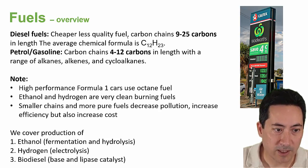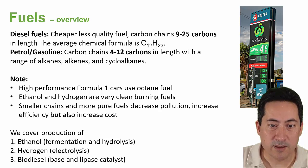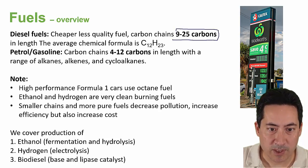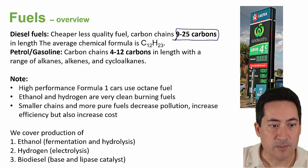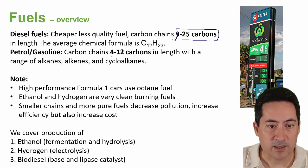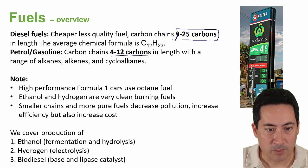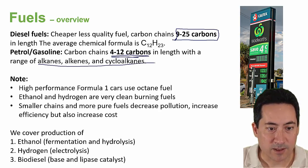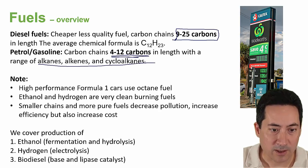We're going to look at petrol and diesel. Diesel has larger chains — it is cheaper but doesn't burn as cleanly. Petrol and gasoline have smaller chains, C4 to C12, are more expensive but burn cleaner. It's a mixture of alkanes, alkenes, and cycloalkanes.